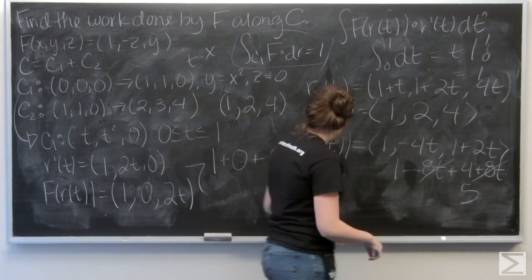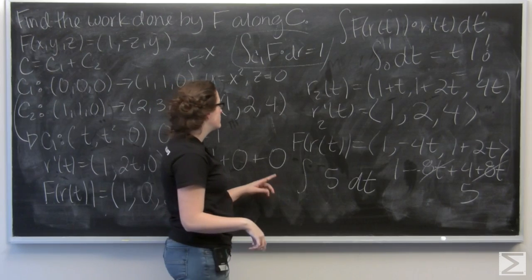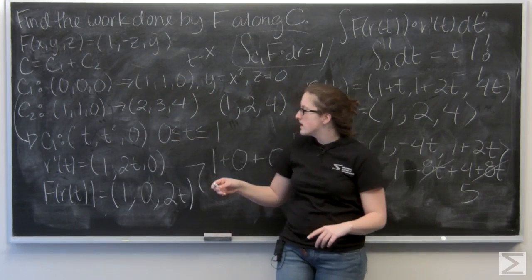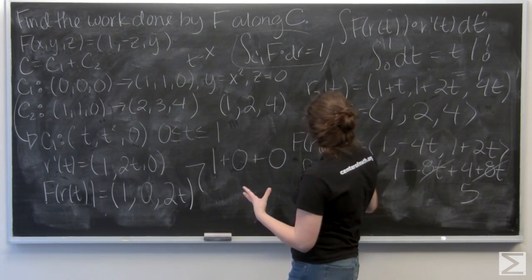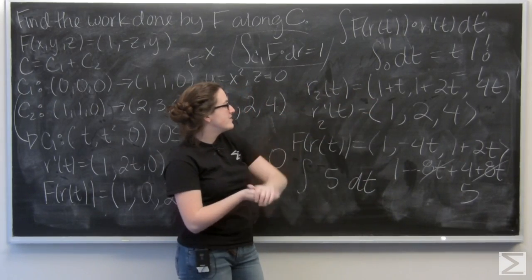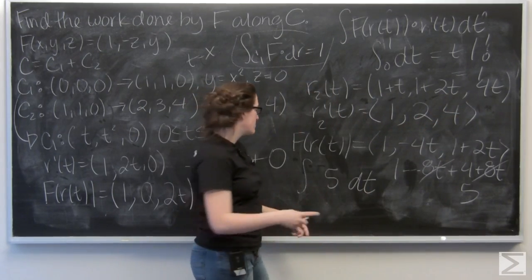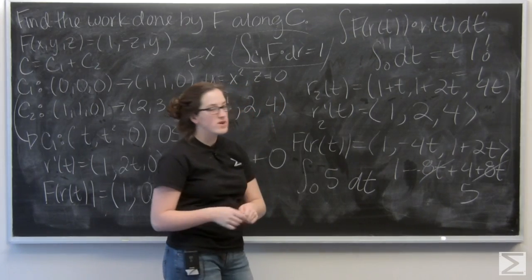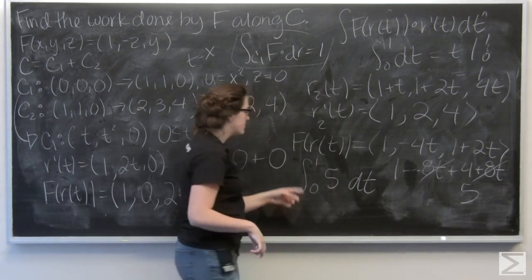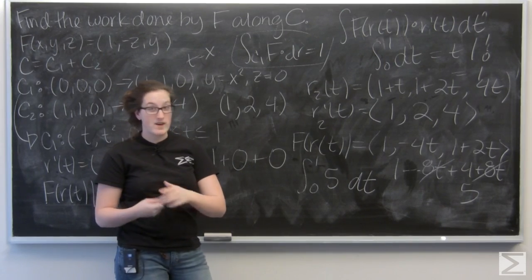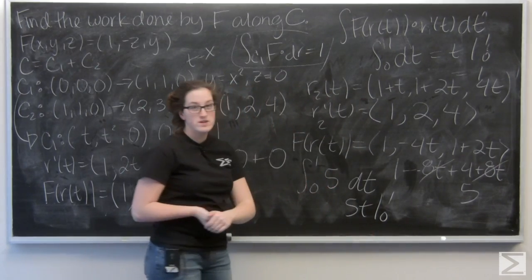So, now I want to integrate that. And I just need to set my bounds of integration. So, let's look back to the parametrization. So, when t equals 0, I'm looking at the point (1,1,0). So, that's definitely going to be my lower bound. And then, for t equals 1, I have (2,3,4). So, that's going to be my upper bound for t. So, let's integrate 5 dt. That's going to be 5t evaluated from 0 to 1. It's going to give me 5.